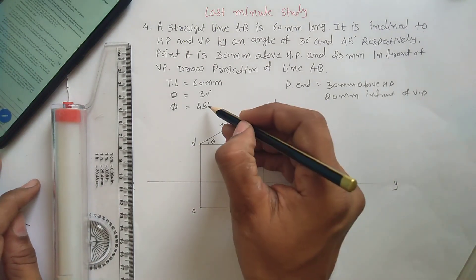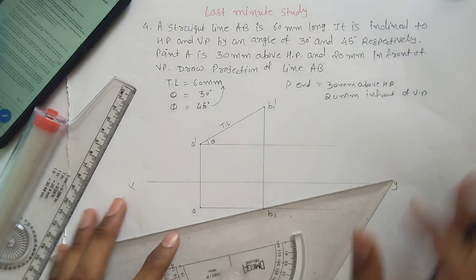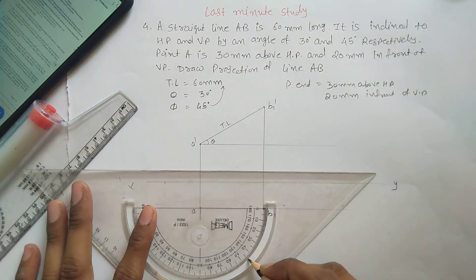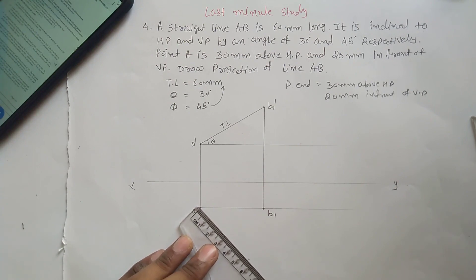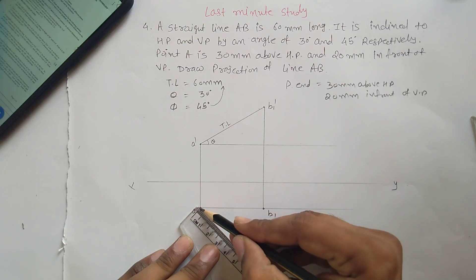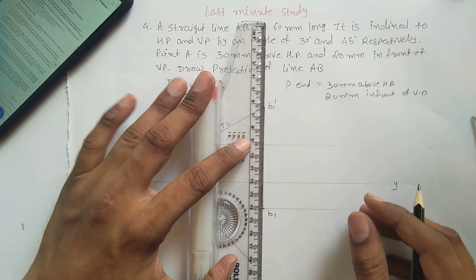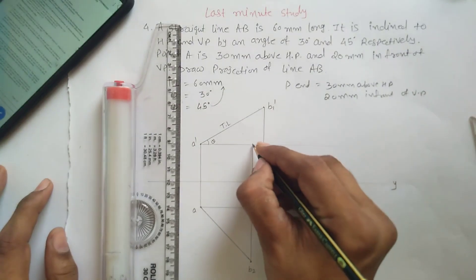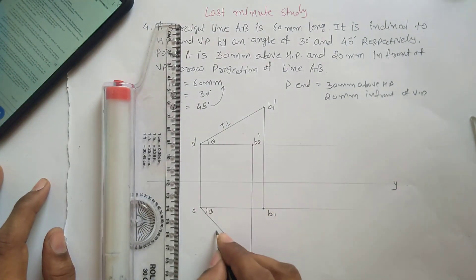Now using phi and true length, draw a line from A. This angle is 45 degrees — we already drew a reference line — so this is 45 degrees and the true length is 60 mm. This gives you B2 dash, the intermediate point. Draw the projection on the line passing from A. B2 dash is drawn using phi and true length.